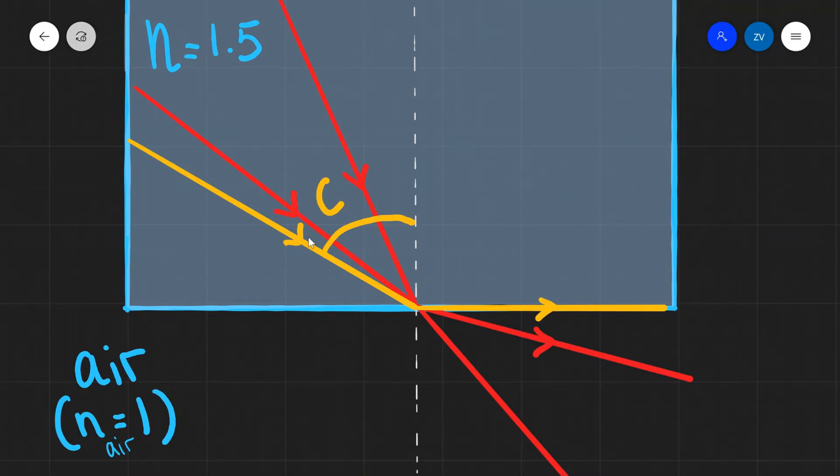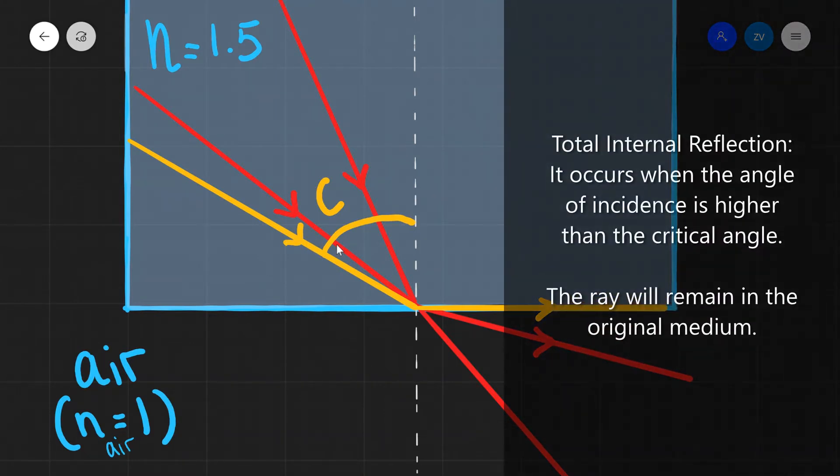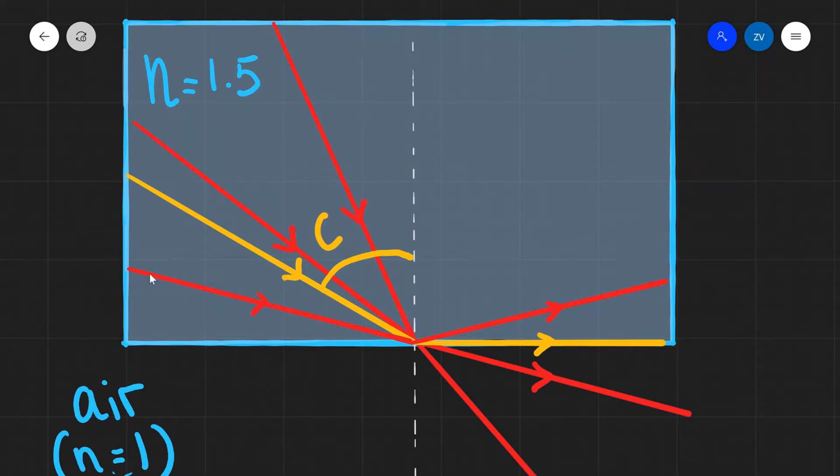This means that when the angle of incidence is at or above the critical angle total internal reflection occurs which is a really important concept in physics. One final aspect to mention is that if our angle of incidence goes beyond the critical angle which is this new ray that I've drawn over here it will totally internally reflect like so and this is the trajectory that the ray is going to follow.